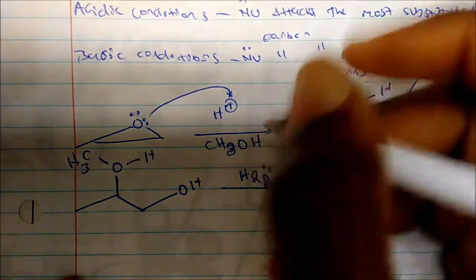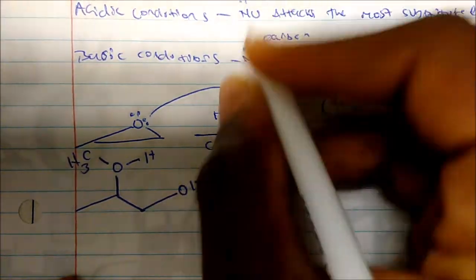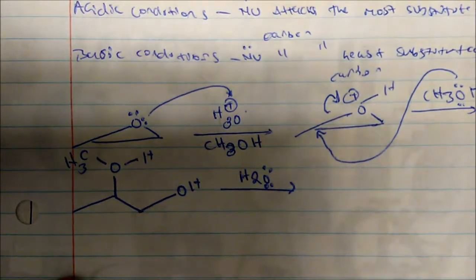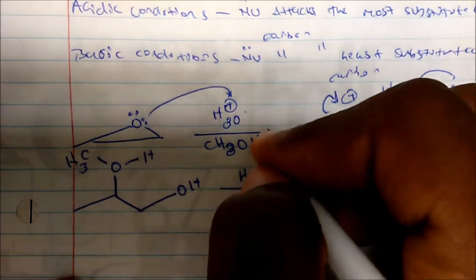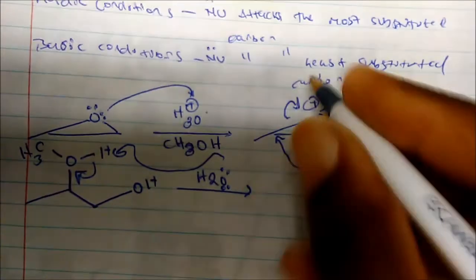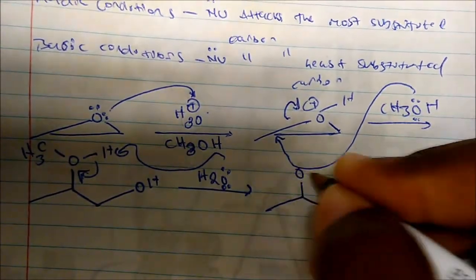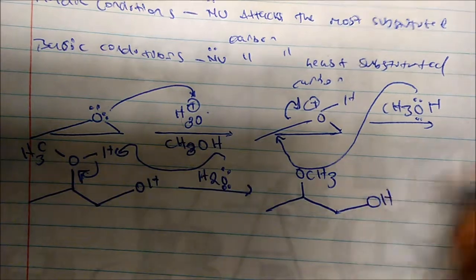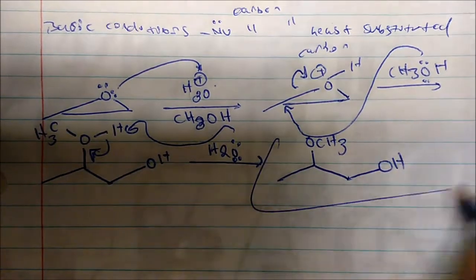In the second step, since we used acid, we form water — so let's write this as H3O+. Water comes in and acts as a base, and we get our neutral product: an ether, and we still have an alcohol. That is our neutral product.